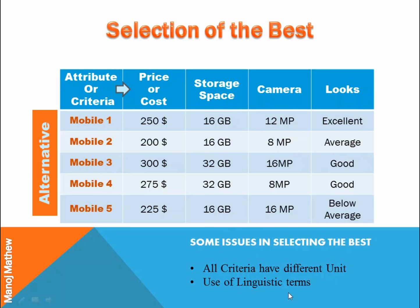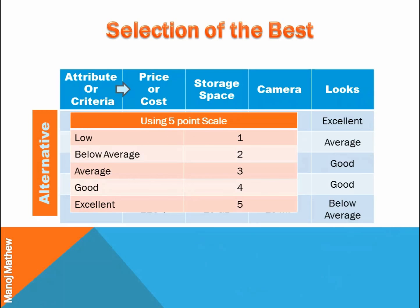Another issue is the use of linguistic terms. We don't express looks or appearance of a mobile in some unit — we say it's good looking or it looks excellent. We can resolve this issue by using a conversion scale. Here I have used a 5-point scale in which 'low' corresponds to 1 and 'excellent' corresponds to 5.